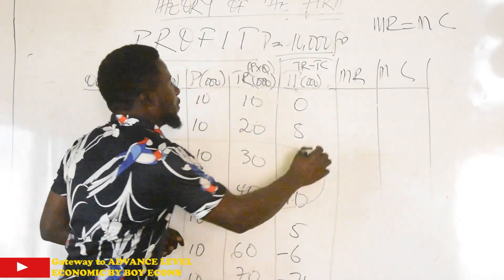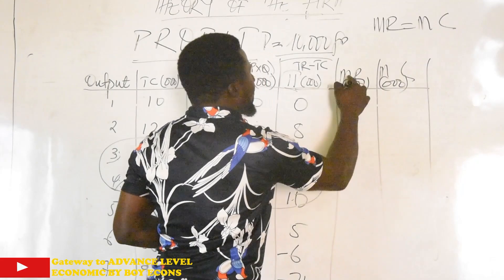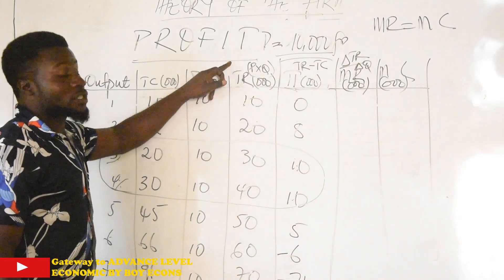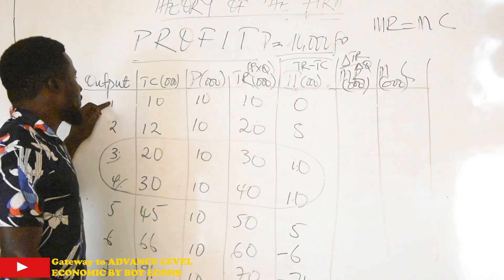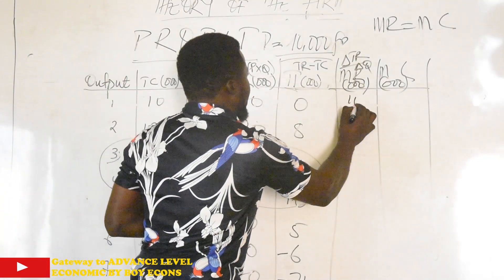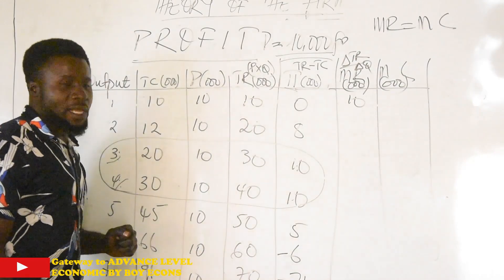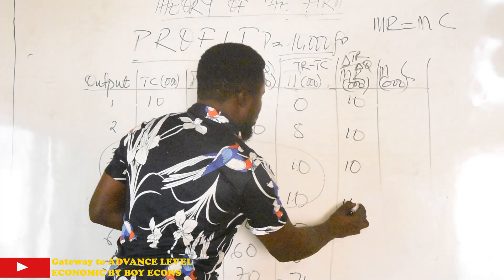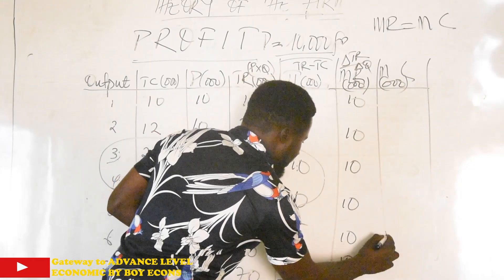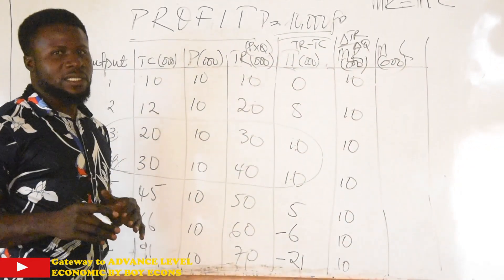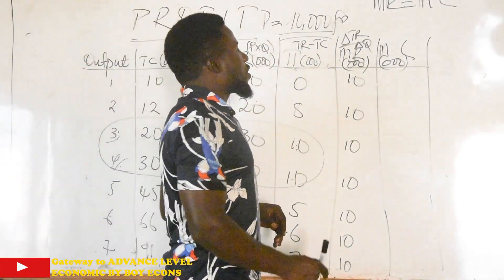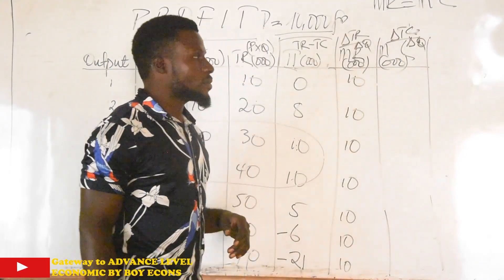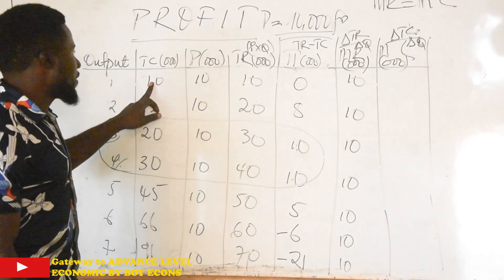Let's calculate marginal revenue — everything is in thousands. The formula for marginal revenue is change in total revenue divided by change in output. Taking the differences: 10÷1=10, then 20−10=10÷1=10. Our marginal revenue is 10 all the way through. Why? Because we are under perfect competition, where marginal revenue is constant and equal to average revenue. Now for marginal cost, the formula is change in total cost divided by change in output. We have our total cost column, and the first value is 10 divided by 1, which gives us 10.